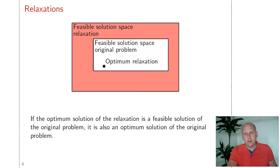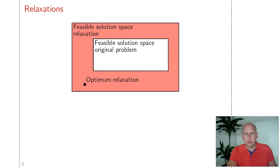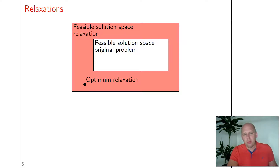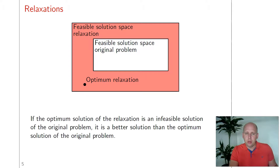The optimal solution of the relaxation can also be outside the feasible solution space of the original problem. It's still the best solution for the entire feasible solution space of the relaxation, which means that if we only consider the feasible solution space of the original problem, there cannot be any better solution. So the optimal solution of the relaxation is better than the optimal solution of the original problem. The optimal relaxation is either also optimal for the original problem or it's better — that's why we can use it as a bound.